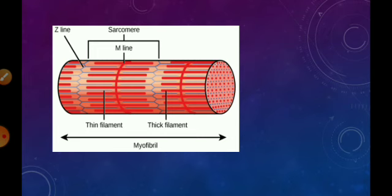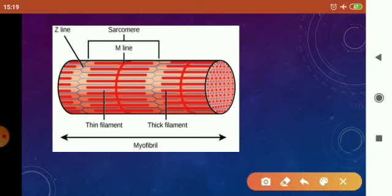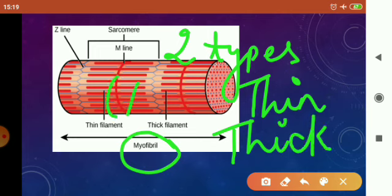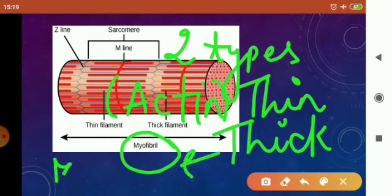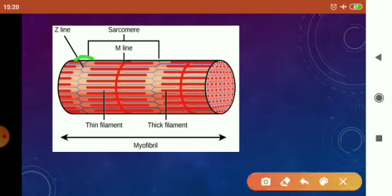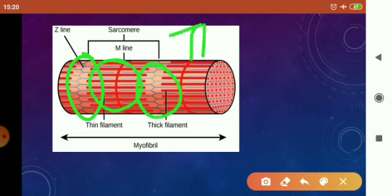Now let's study in detail the structure of the striated muscle fiber. This muscle fiber is also called a myofibril, and this myofibril has two types of filaments: thin filament and thick filament. The thin filaments are made up of a protein called actin, whereas the thick filaments are made up of a protein called myosin. In the diagram, the fine thin lines are called thin filaments.